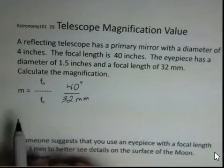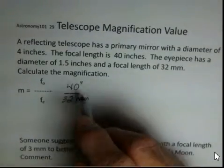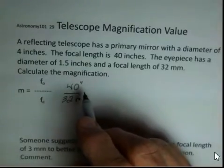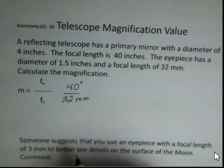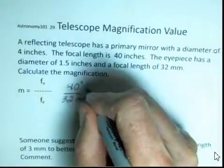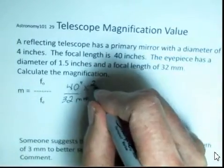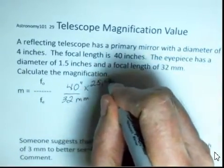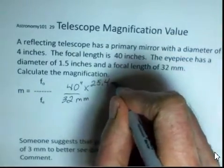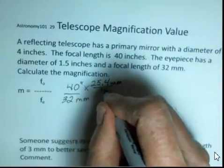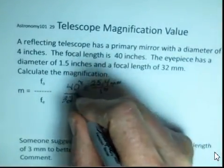Magnification has no units, so we need to cancel off our length units here. And I'm going to make that happen by converting inches into millimeters. There's a conversion factor, 25.4 millimeters is one inch. So the inch units have canceled.